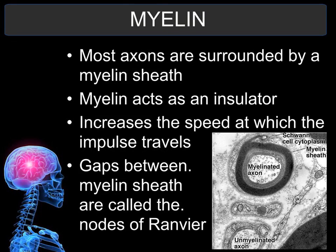Myelin is a structure that surrounds the axon. It is almost like a jelly roll around the axon, and it forms a myelin sheath. The function of myelin is to insulate the axon, and that allows information to travel down the axon much faster. The areas of the axon where there is no myelin are called the node of Ranvier.